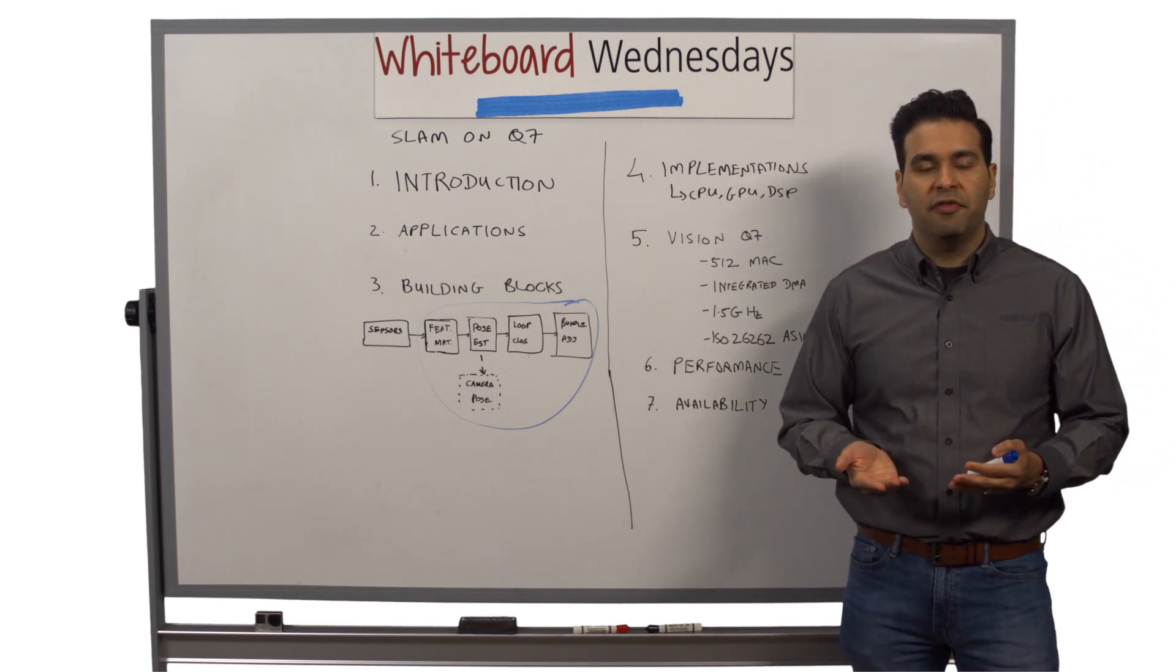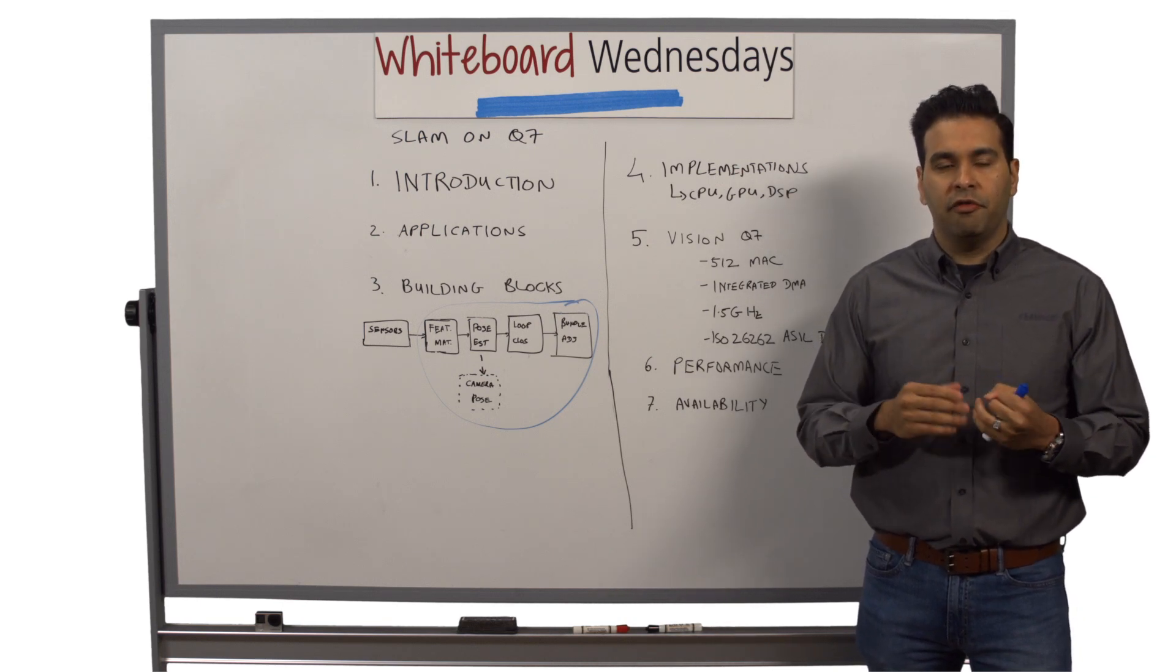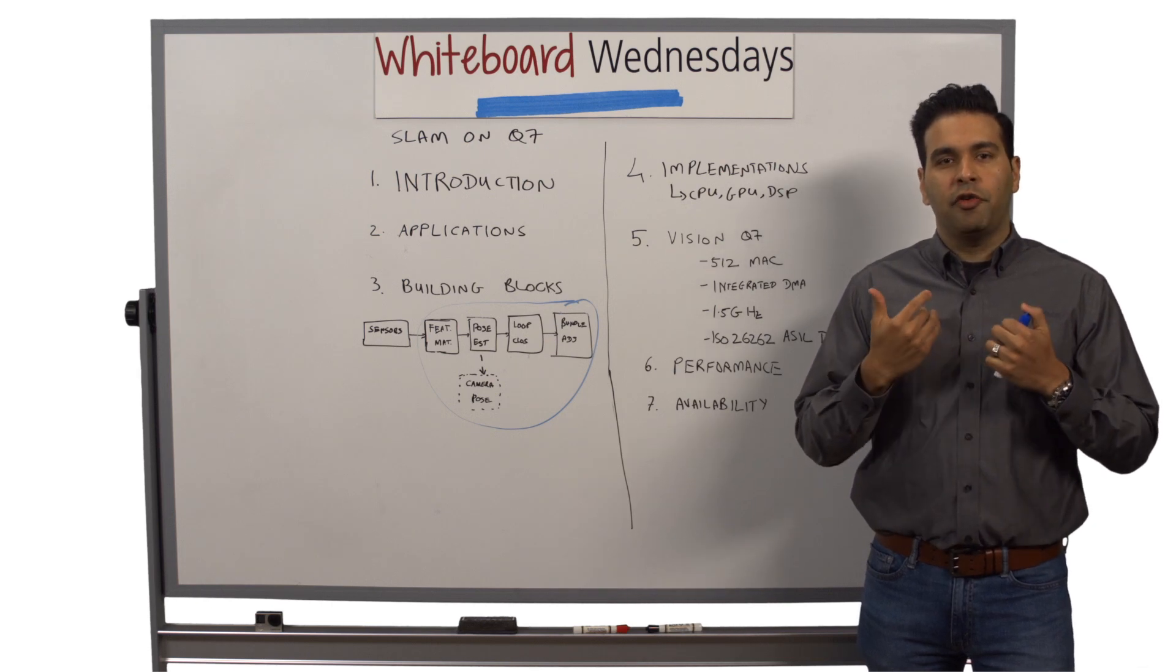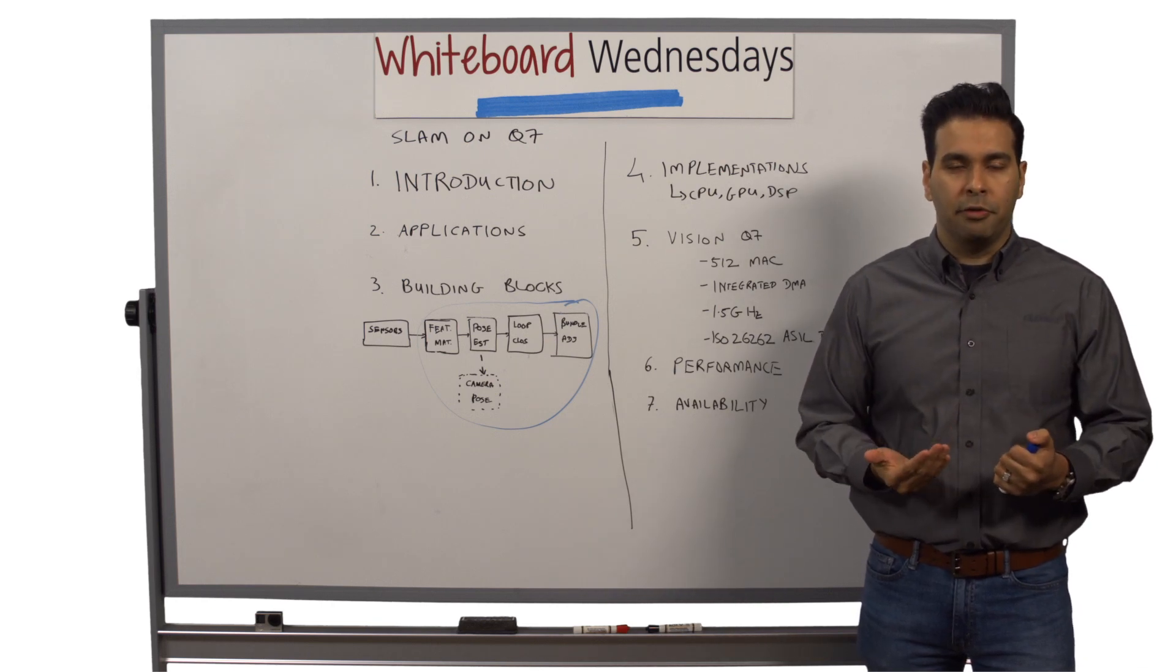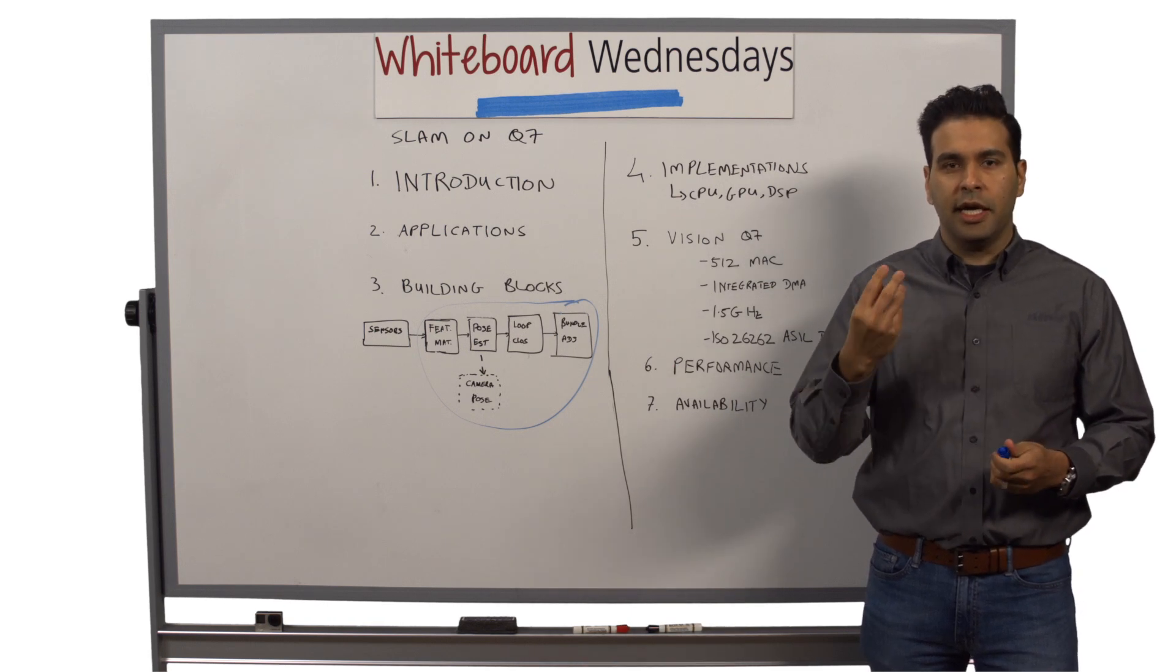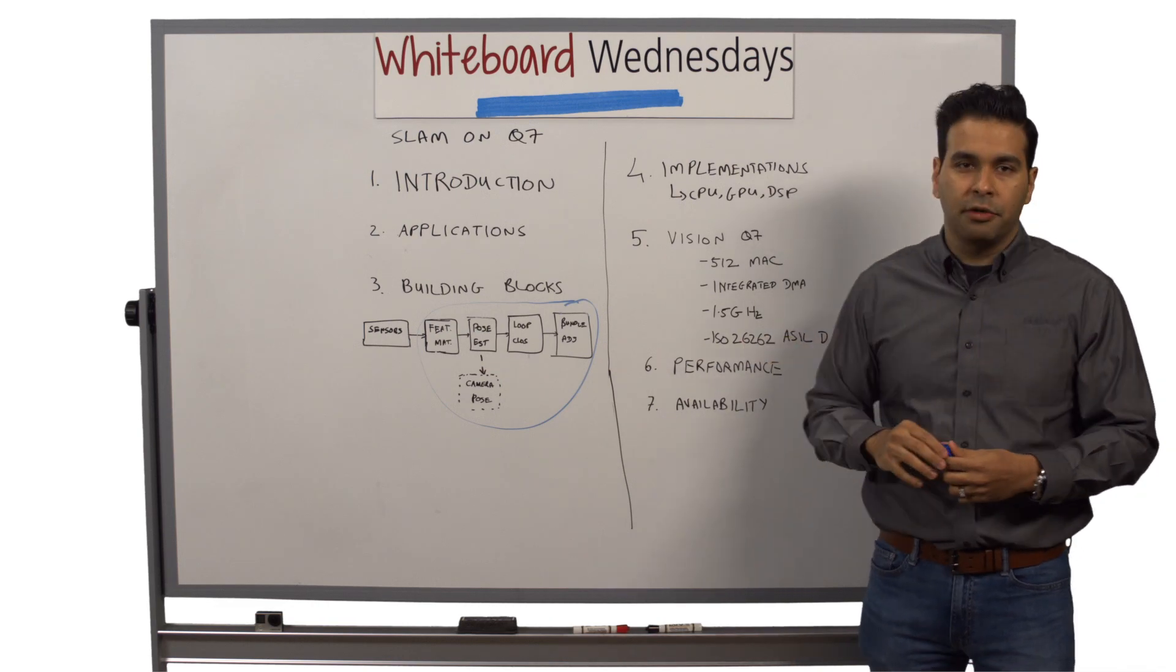With all these additional benefits and improvements, Vision Q7 can give you a much higher refresh rate or frames per second for your camera pose. So, if your application is going to very heavily rely on SLAM to get that accurate camera position, as well as a high camera refresh rate, Vision Q7 is a great option.